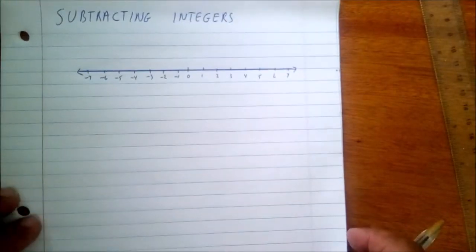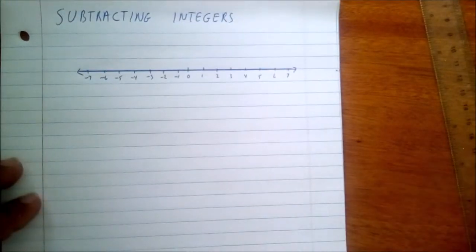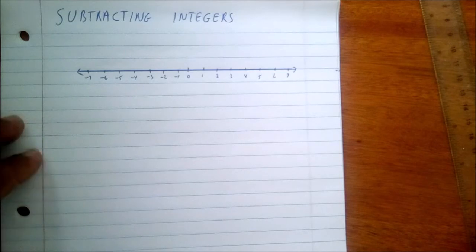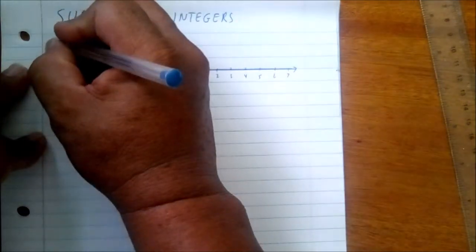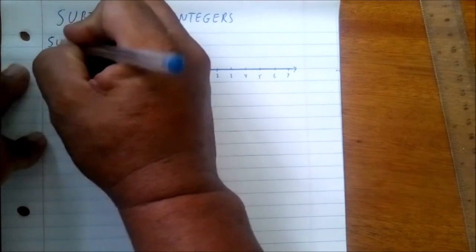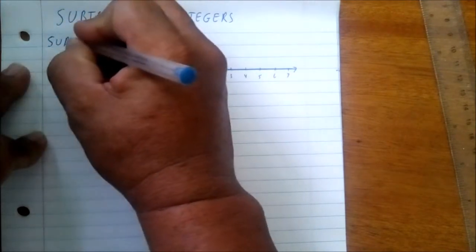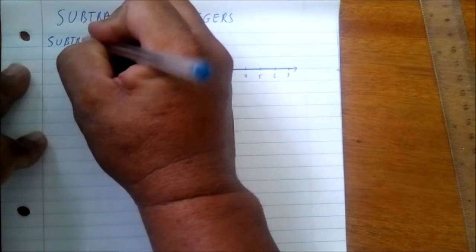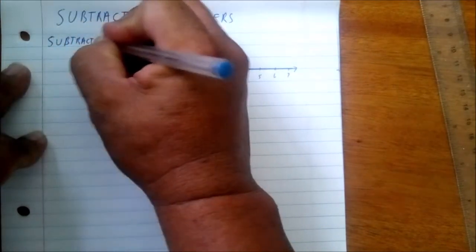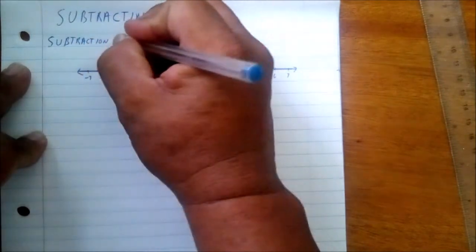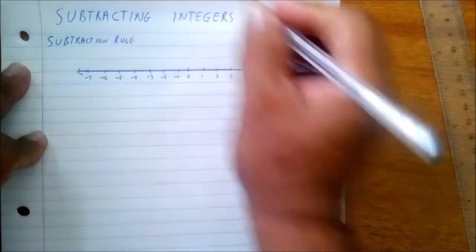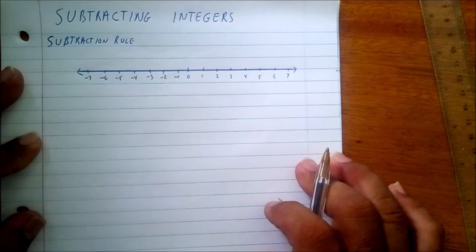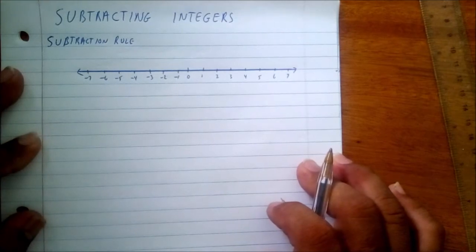Okay, this is a subtraction of integers. The first thing we're going to be learning here is the subtraction rule. Once we understand the subtraction rule, we should have no problem in subtracting integers.